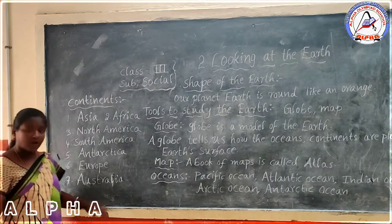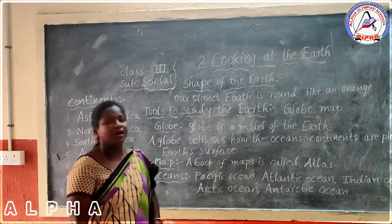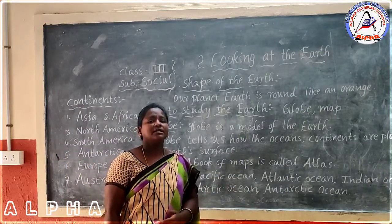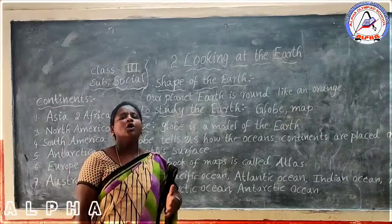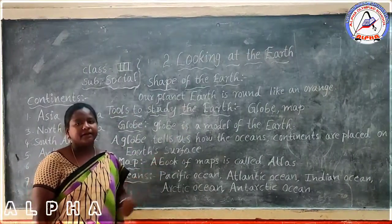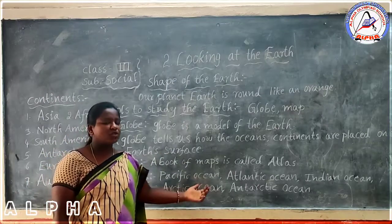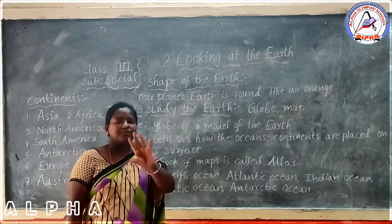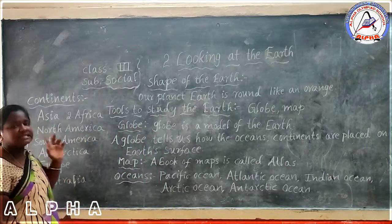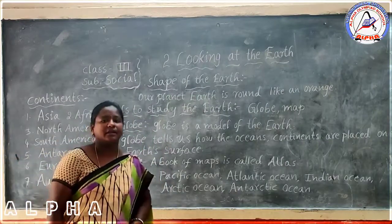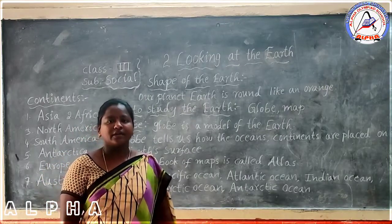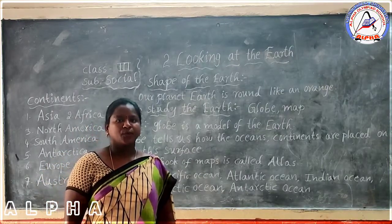This is our discussion for today. What did we discuss? The shape of the earth is round. Globe is a model of the earth. There are five major oceans and seven continents. Children, practice the oceans and continents. Thank you.